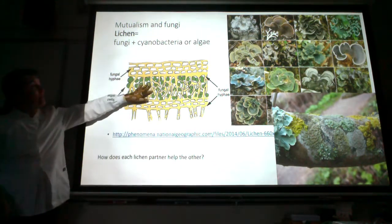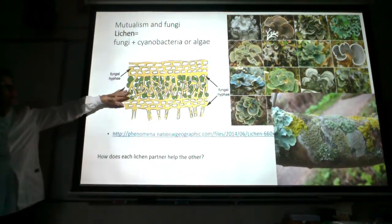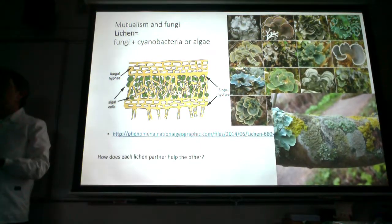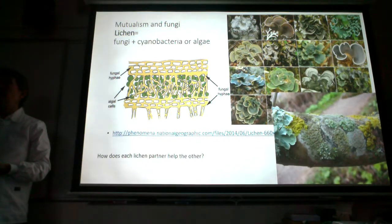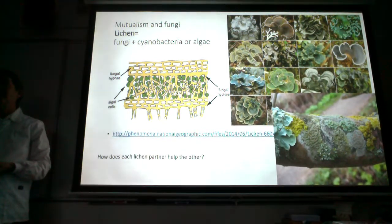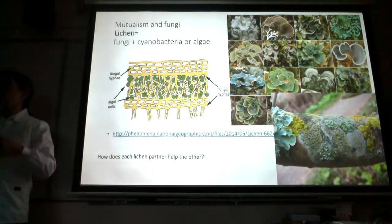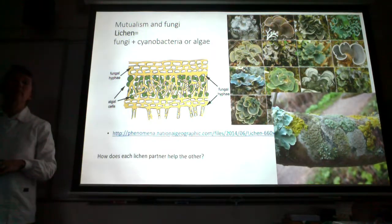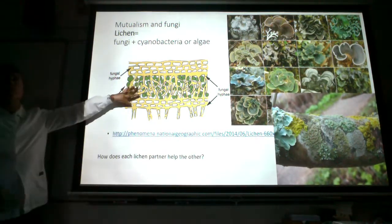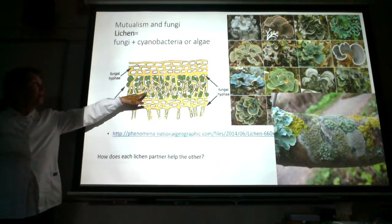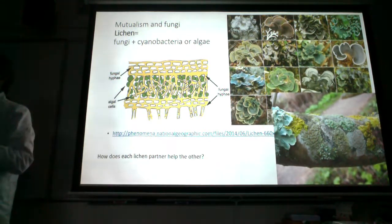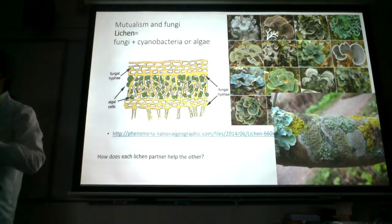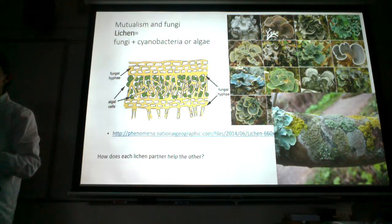If we do a cross-section through a lichen and look at it under the microscope, we see yellow filaments — those are the fungal hyphae. The green circles are the algae or cyanobacteria. On the lab exam you can give me either one. So why is this mutualism? Why is it win-win?